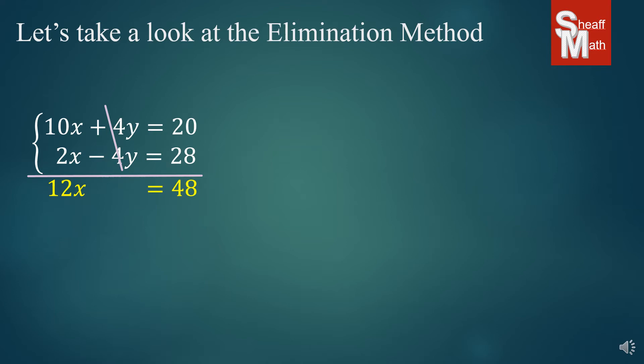Our x's come out to 12x, and our whole numbers come out to 48. So, we get 12x equals 48. This is the whole point of the elimination method. We're trying to eliminate either the y's or the x's. In this case, we eliminated the y's. Now, why is that helpful to us? Now, we can solve for x. All we have to do is divide by 12 on both sides, and we get x equals 4.